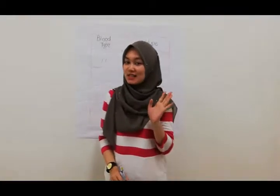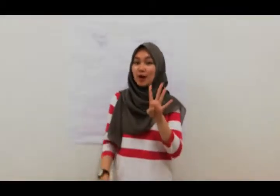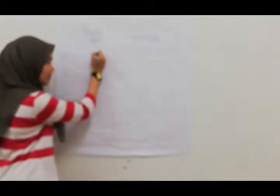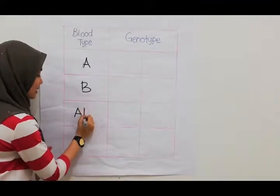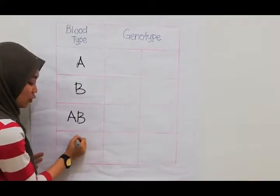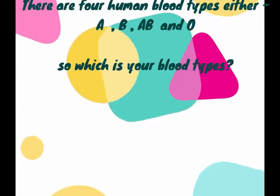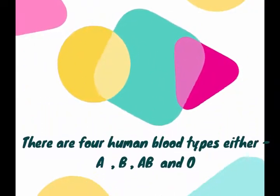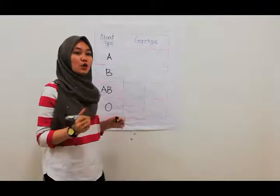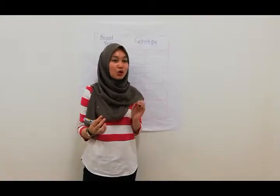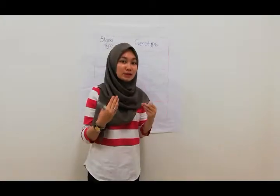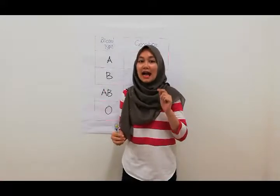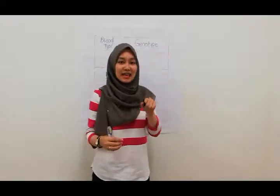Okay, everyone. So we have four blood types which are blood A, blood B, blood AB, and blood O. Human blood type is determined by co-dominant elements. There are three different alleles for human blood types which are IA, IB, and IO.